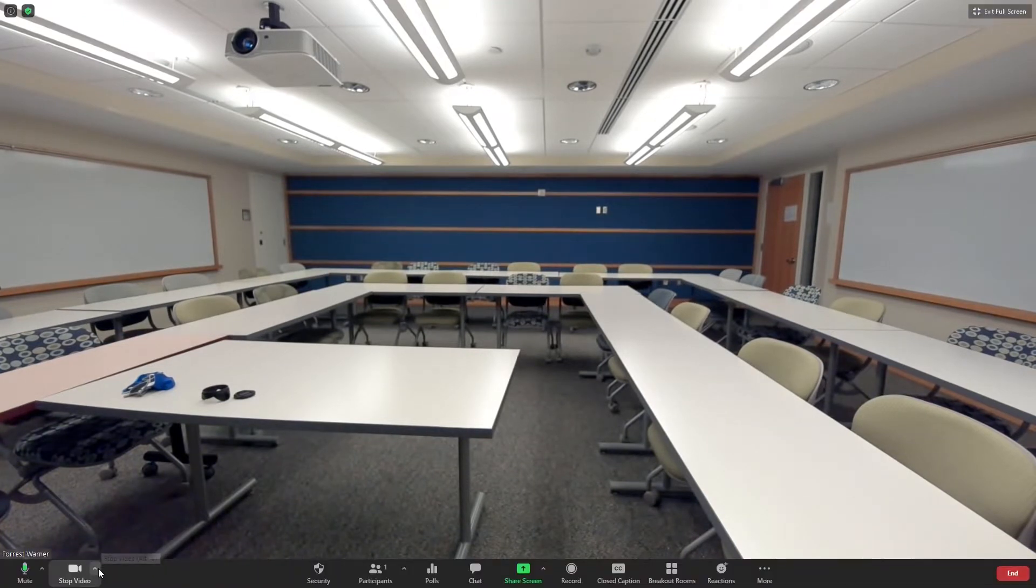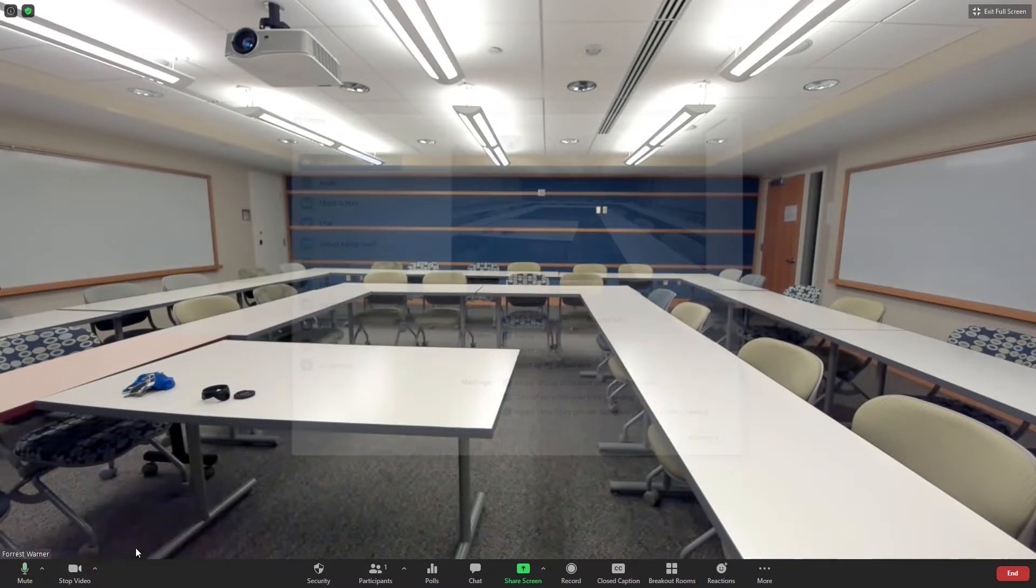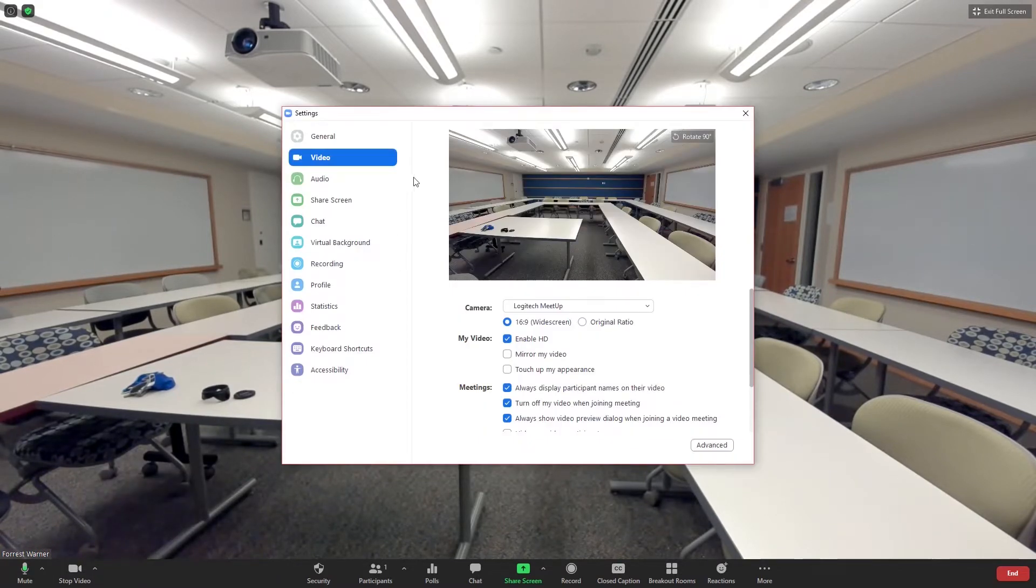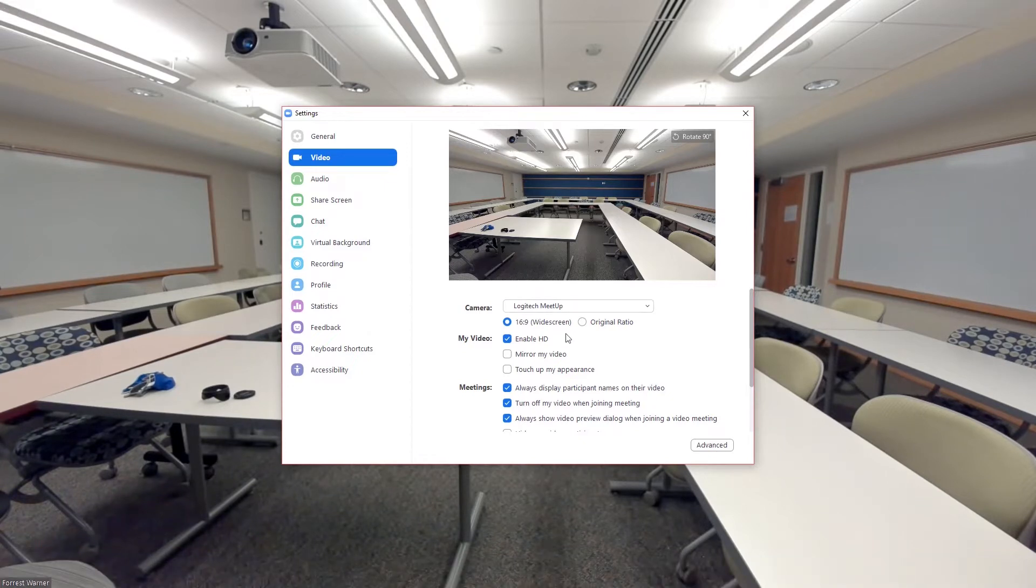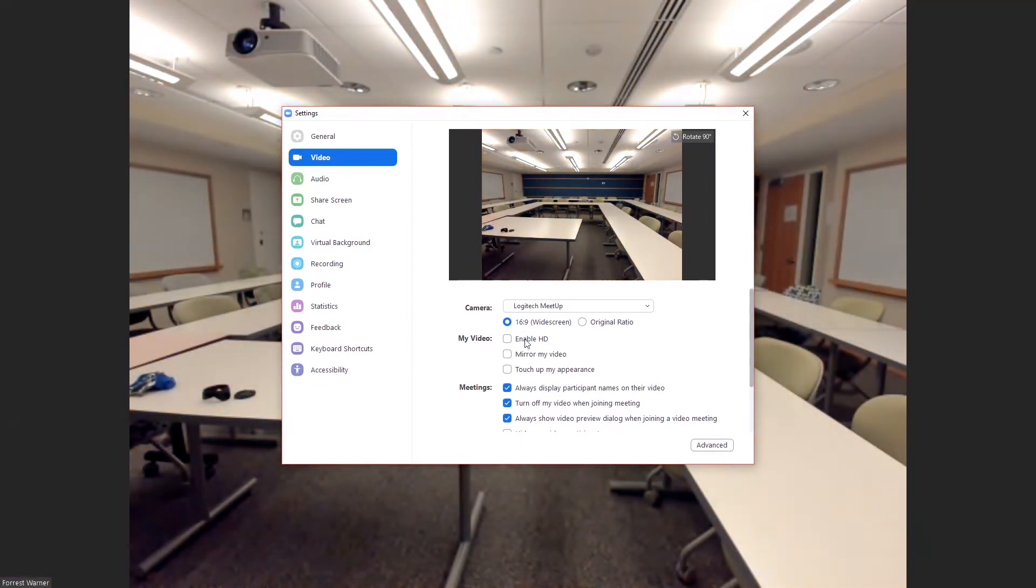Yeah, I just want to double check that our video settings are correct. If you go into, click the caret next to the video, stop video button, you can click video settings. A few things you should double check is that your video is enabled for HD. If you click that button, your video, you see how it gets cropped down, you'll lose a little bit of the quality. Just make sure that you turn that on. That's pretty standard. Leave it on whenever possible.